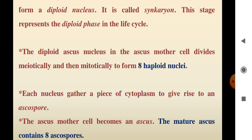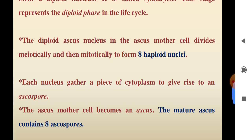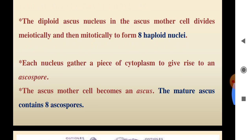The diploid ascus nucleus divides meiotically and then mitotically. First four haploid nuclei form, and then eight haploid nuclei form. Each nucleus gathers a piece of cytoplasm to give rise to an ascospore.